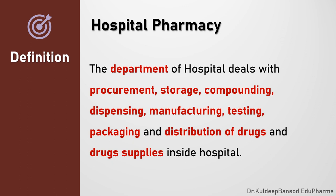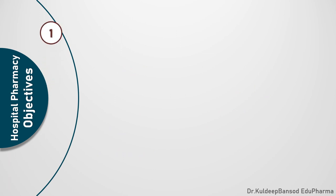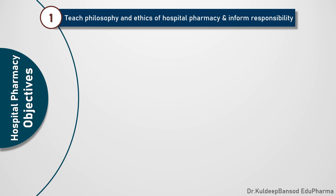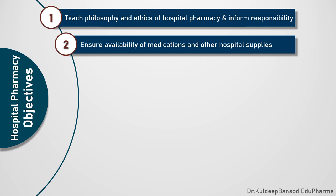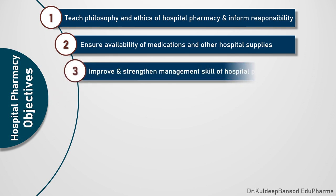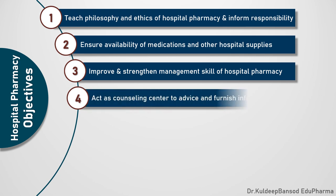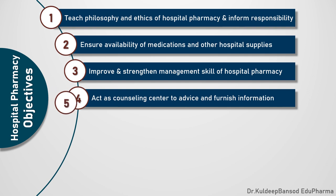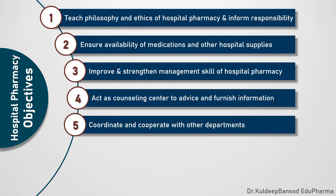Let us see the objectives of Hospital Pharmacy. The first and foremost objective is to educate all the staff working in a pharmacy department about the philosophy and ethics, as well as convey the roles and responsibilities so everyone has an idea and knows their job better. The second is to ensure at all times the availability of medications and other hospital supplies, so they do not go out of stock.